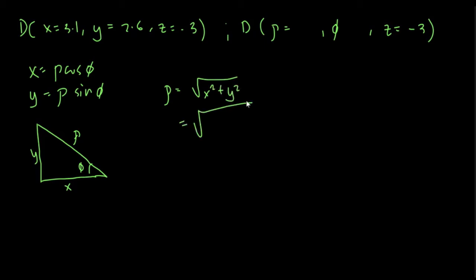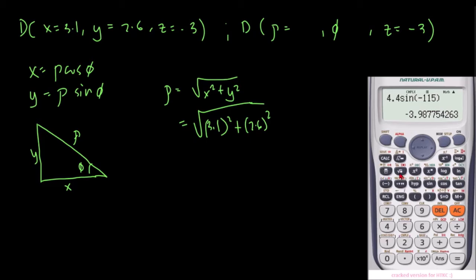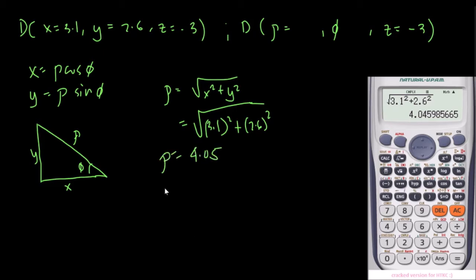Substituting the given values: rho equals square root of 3.1 squared plus 2.6 squared. Using our calculator: square root of 3.1 squared plus 2.6 squared. This is equal to 4.05. So our rho equals 4.05.